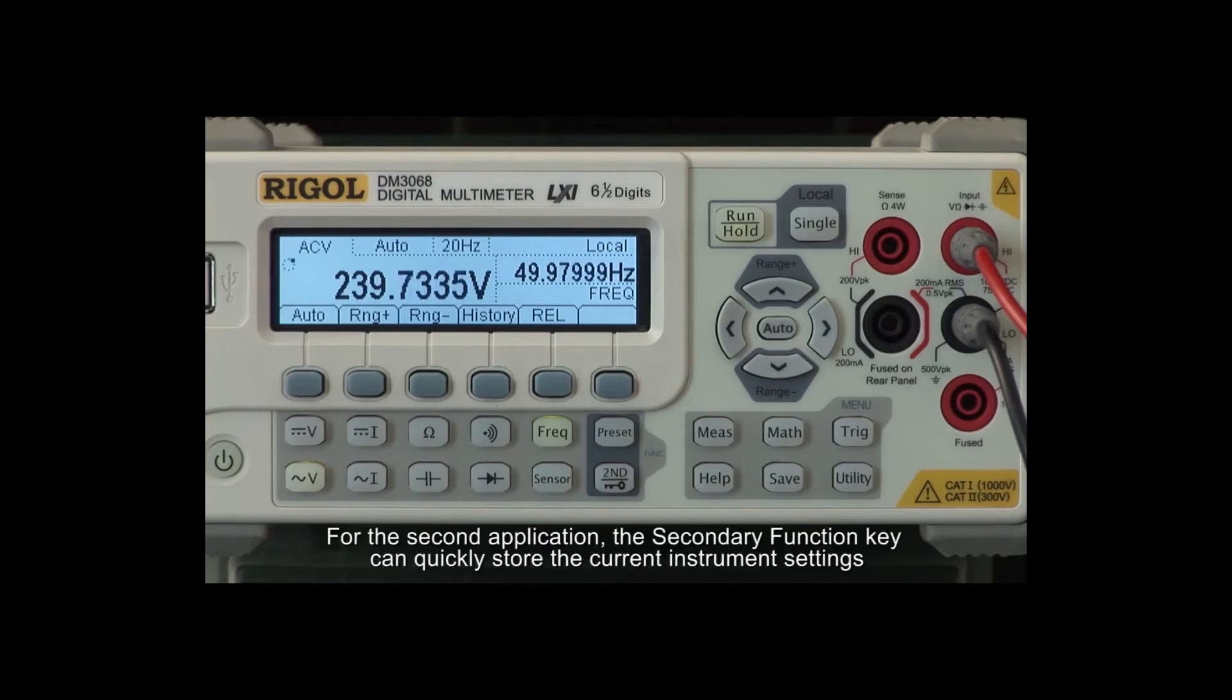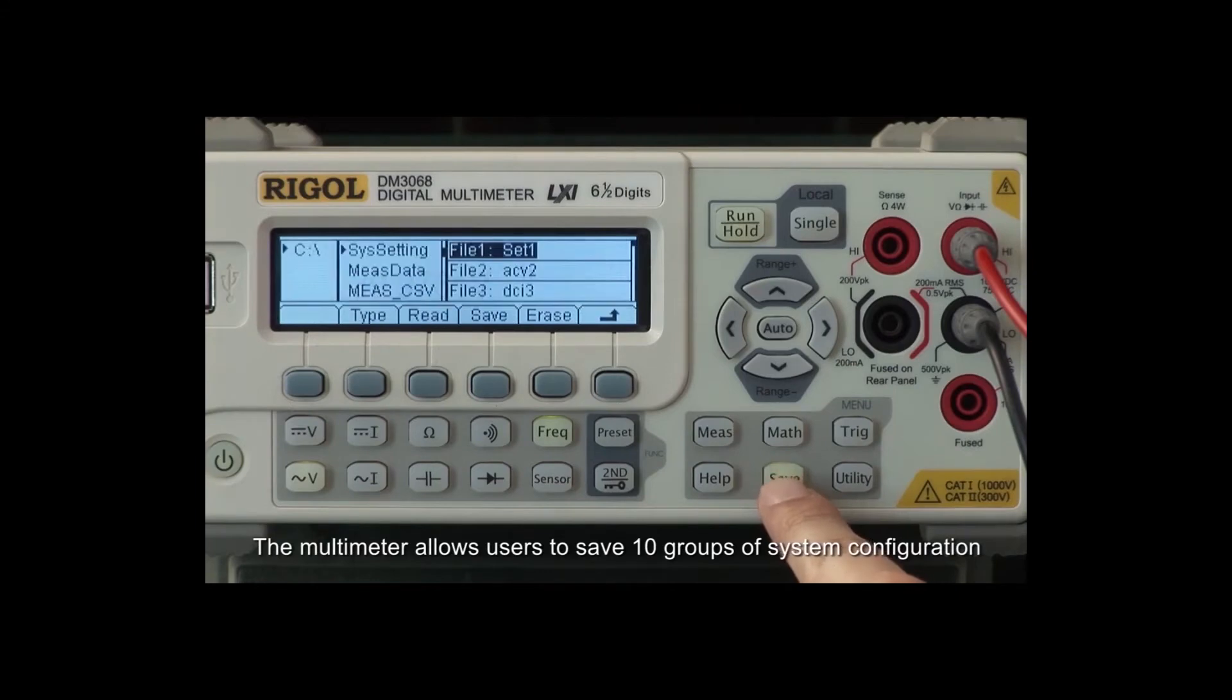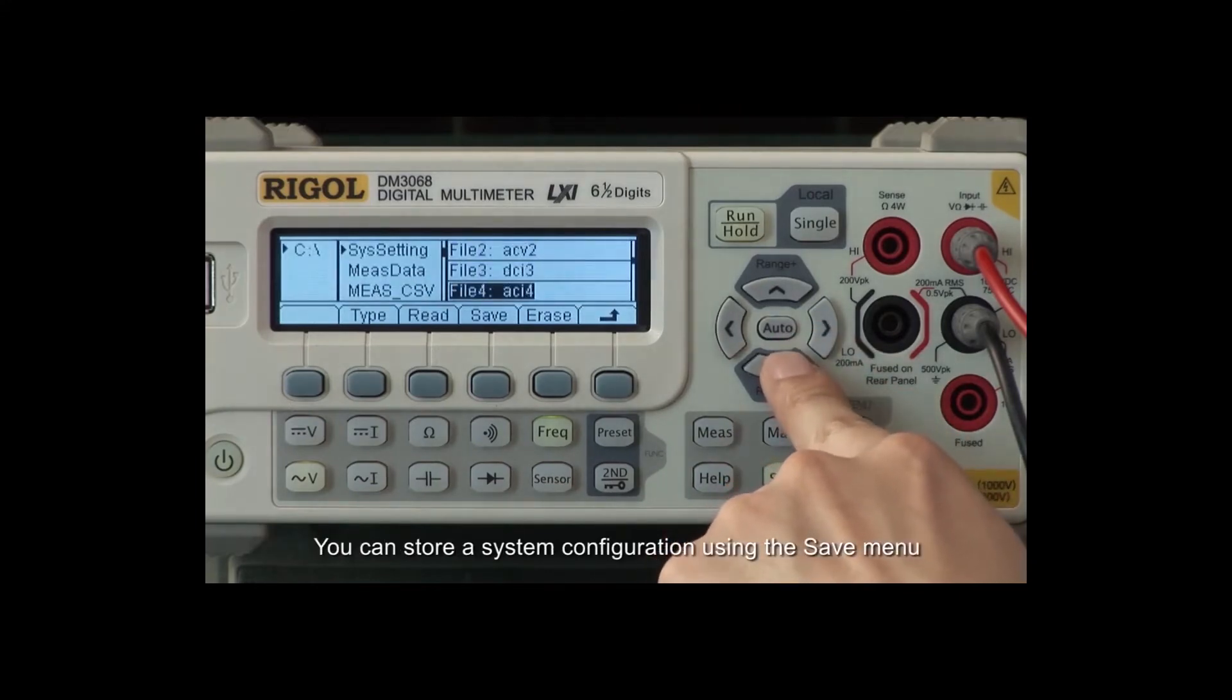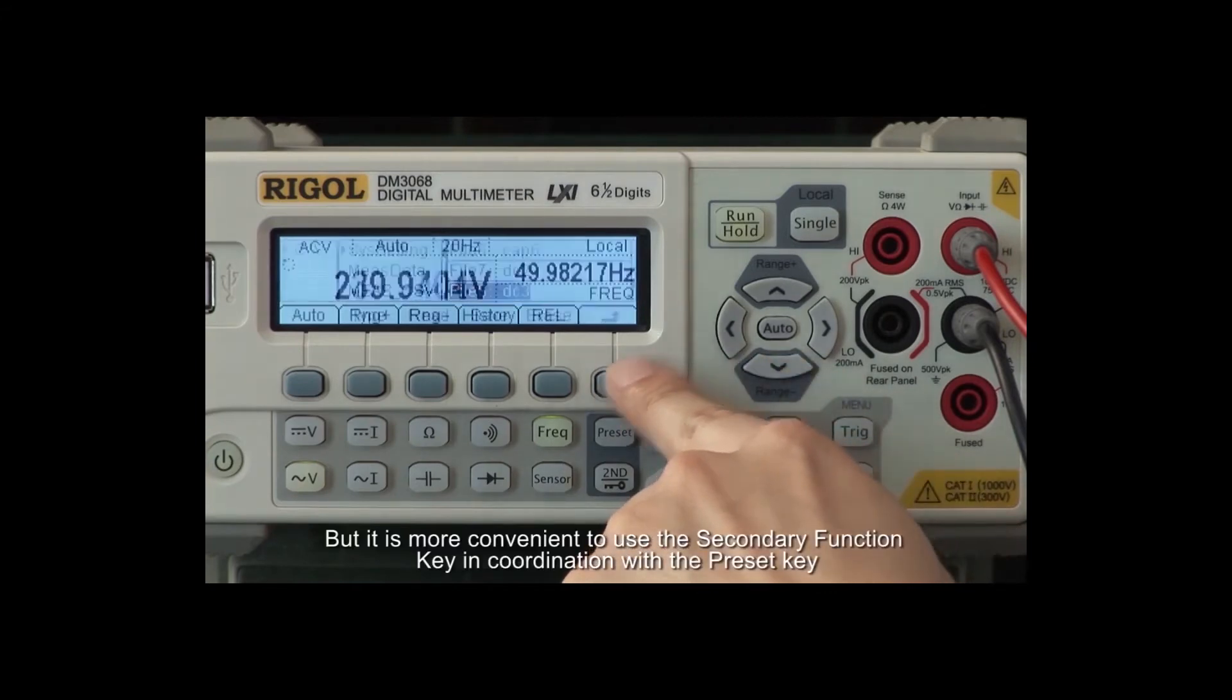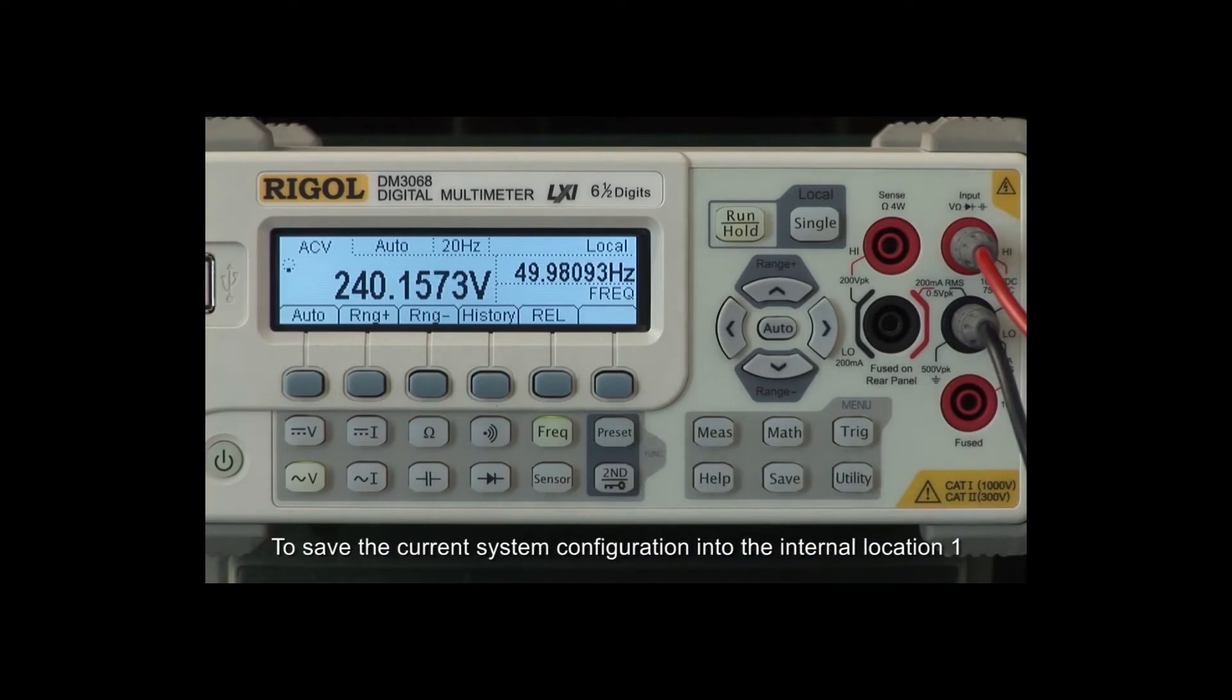For the second application, the Secondary Function Key can quickly store the current instrument settings. The multimeter allows users to save ten groups of system configurations. You can store a system configuration using the saved menu, but it's more convenient to use the Secondary Function Key in coordination with the preset key.